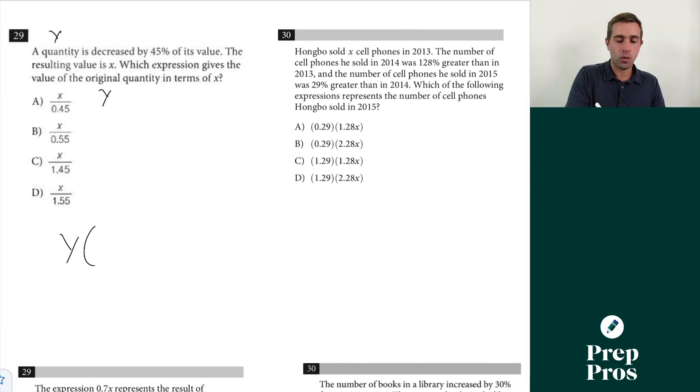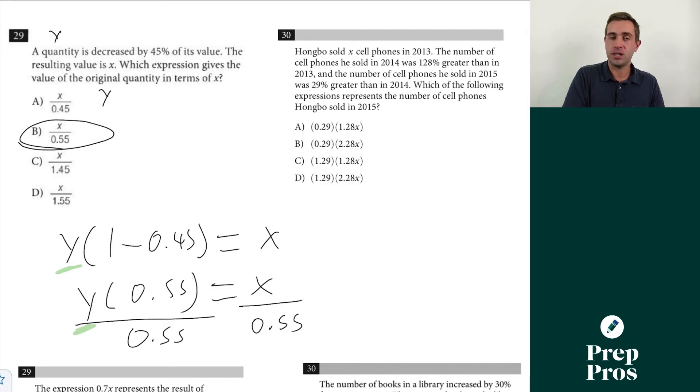That's going to be the same as y times 1 minus, because this is a decrease, our percent expressed as a decimal. So it's going to be the same as 1 minus 0.45 is going to equal x. This is going to give us y times 0.55, that's the same as 1 minus 0.45, is going to equal x. If we want to solve for this so we can see what our original value is, which is y, we're simply going to be dividing both sides of this equation by 0.55. And that's how we can see that b is our right answer.